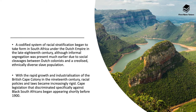A codified system of racial stratification began to take form in South Africa under the Dutch Empire in the late 18th century, and this is really where the roots of apartheid began. Although informal segregation was present much earlier due to social cleavages between Dutch colonists and an ethnically diverse slave population, the rapid growth and industrialisation of the British Cape Colony in the 19th century meant that racial policies and laws became increasingly rigid.